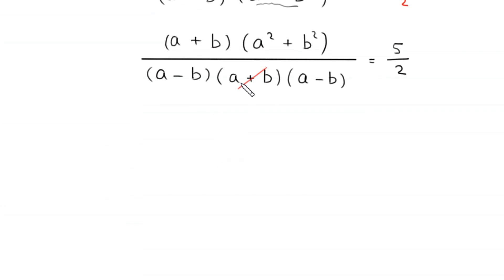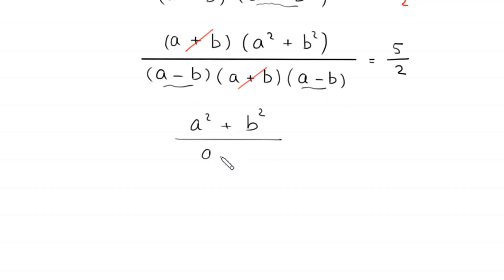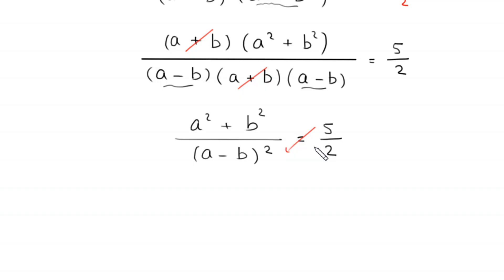The (a + b) factor cancels, and we are left with (a² + b²) divided by (a - b)(a - b), which equals (a² + b²) divided by (a - b)² = 5/2. We apply cross multiplication, multiplying 5 by the left expression and 2 by the right.